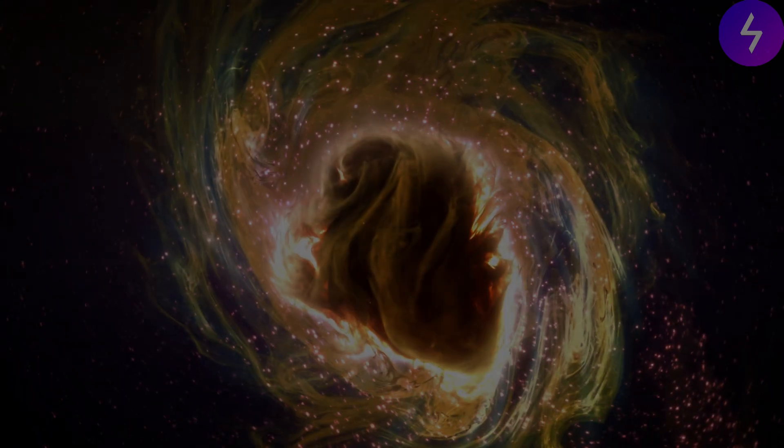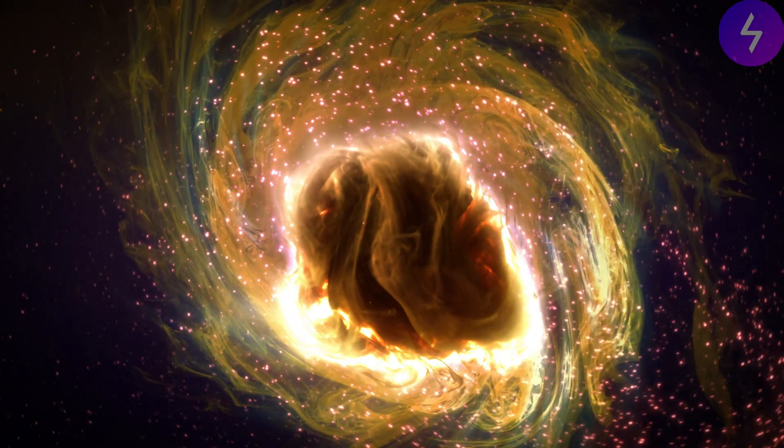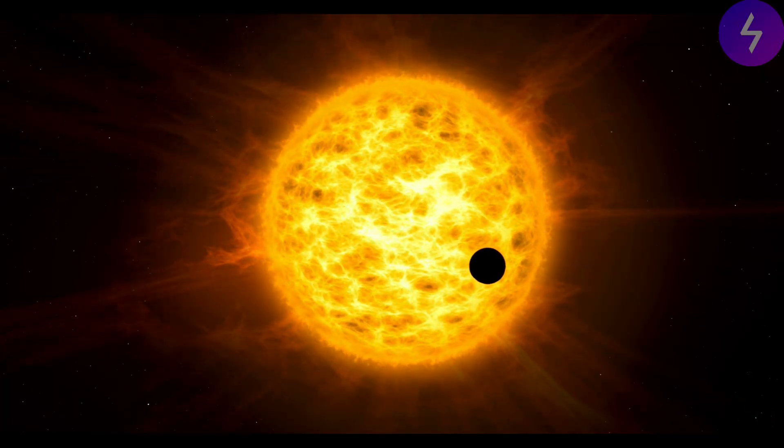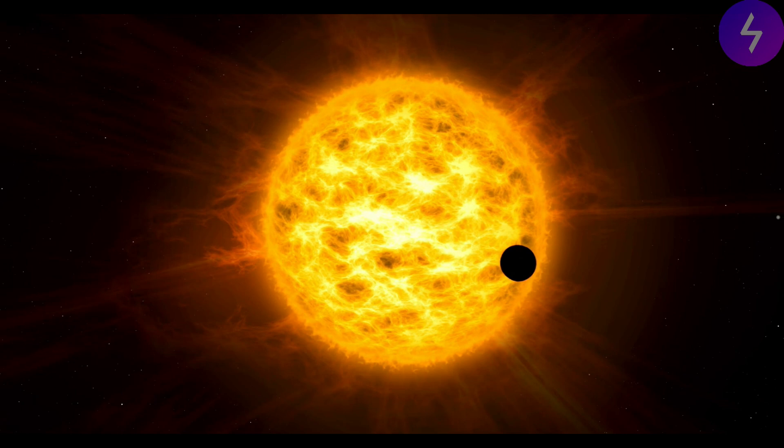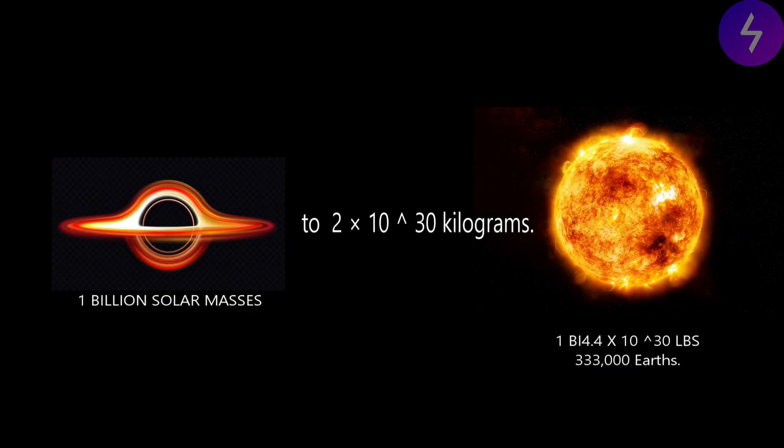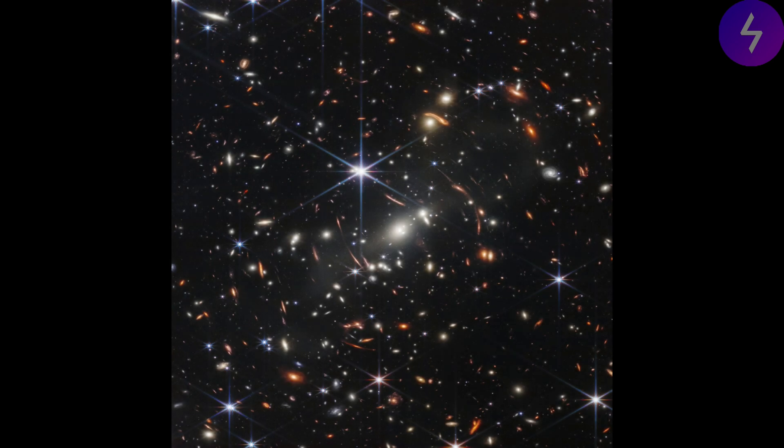In July, astronomers announced that the JWST had detected the most distant active supermassive black hole ever seen, whose host galaxy formed just 570 million years after the Big Bang. However, this ancient black hole has puzzlingly low mass—just 9 million times that of the sun. For comparison, most black holes weigh over 1 billion solar masses, where 1 solar mass is equivalent to 2 by 10 to the 30 kilograms.